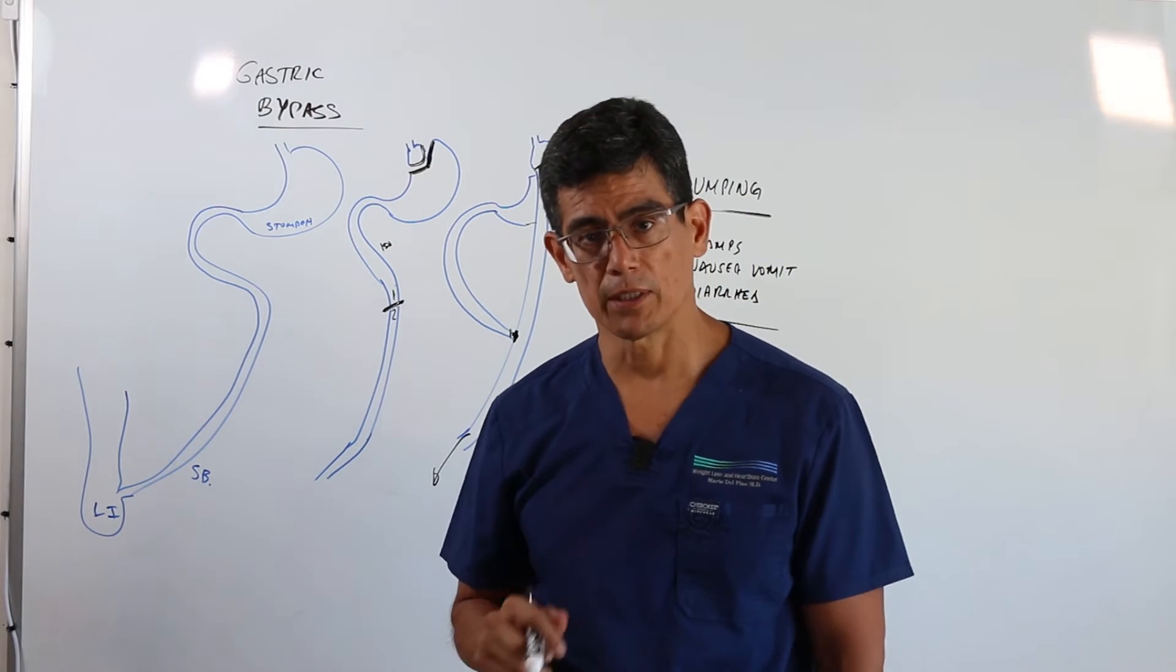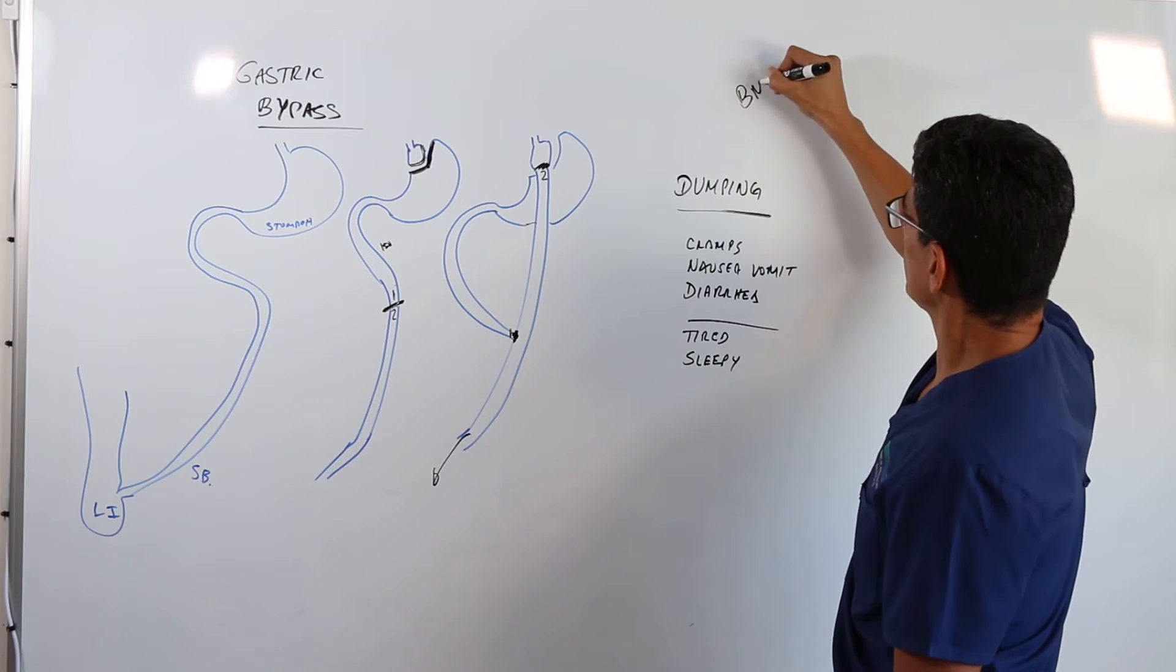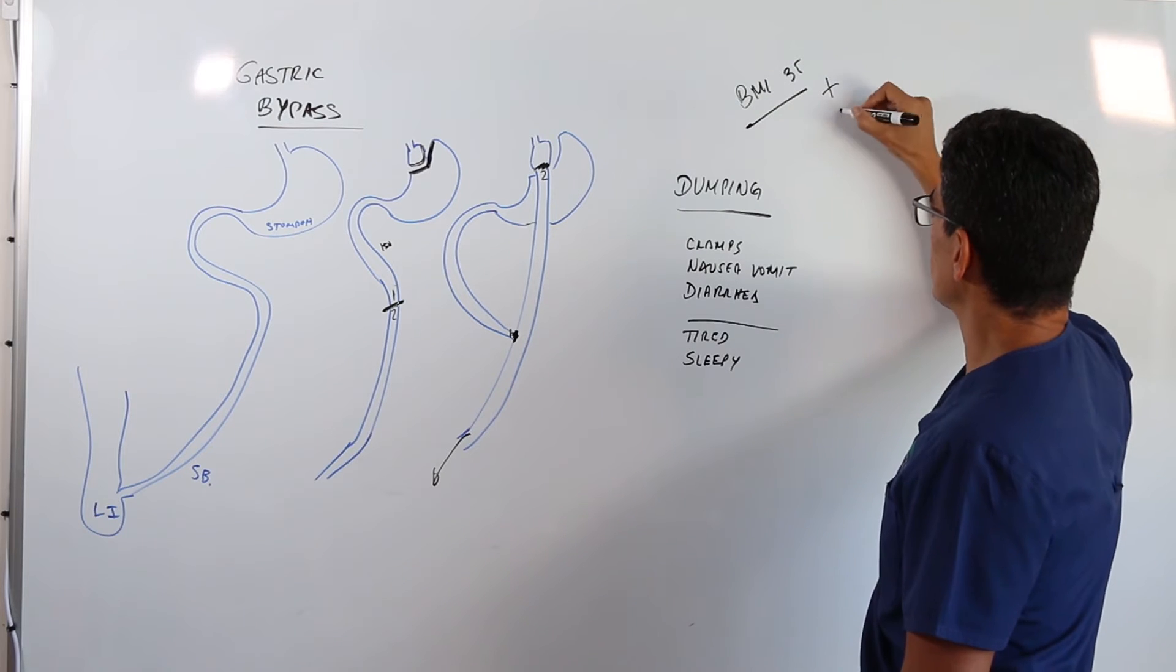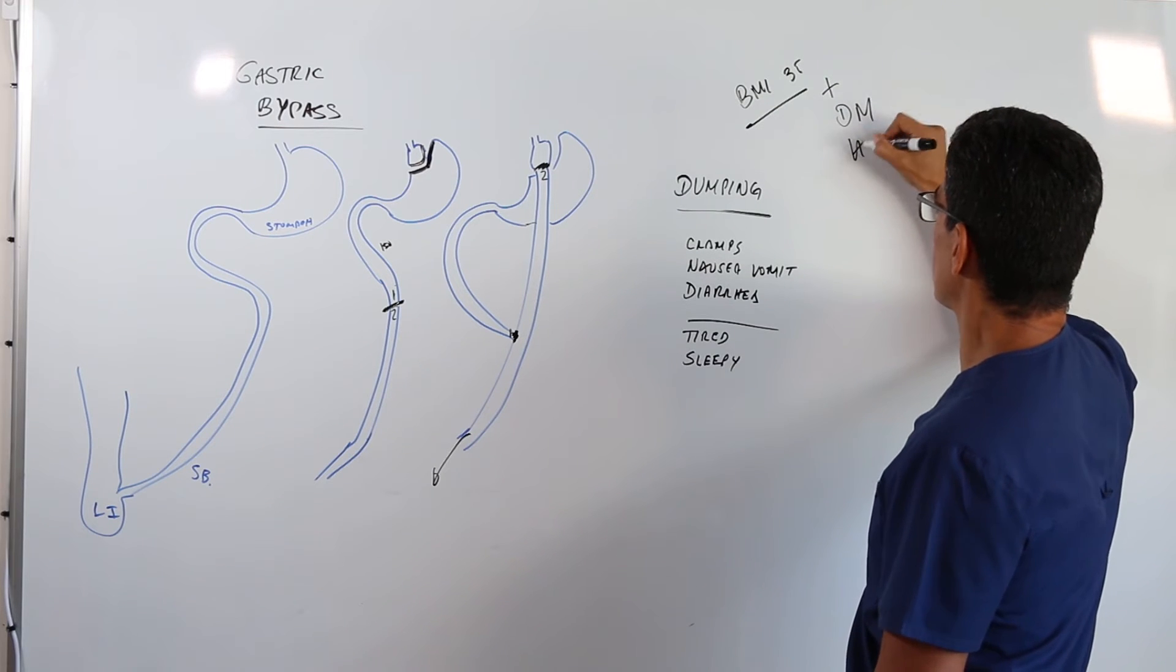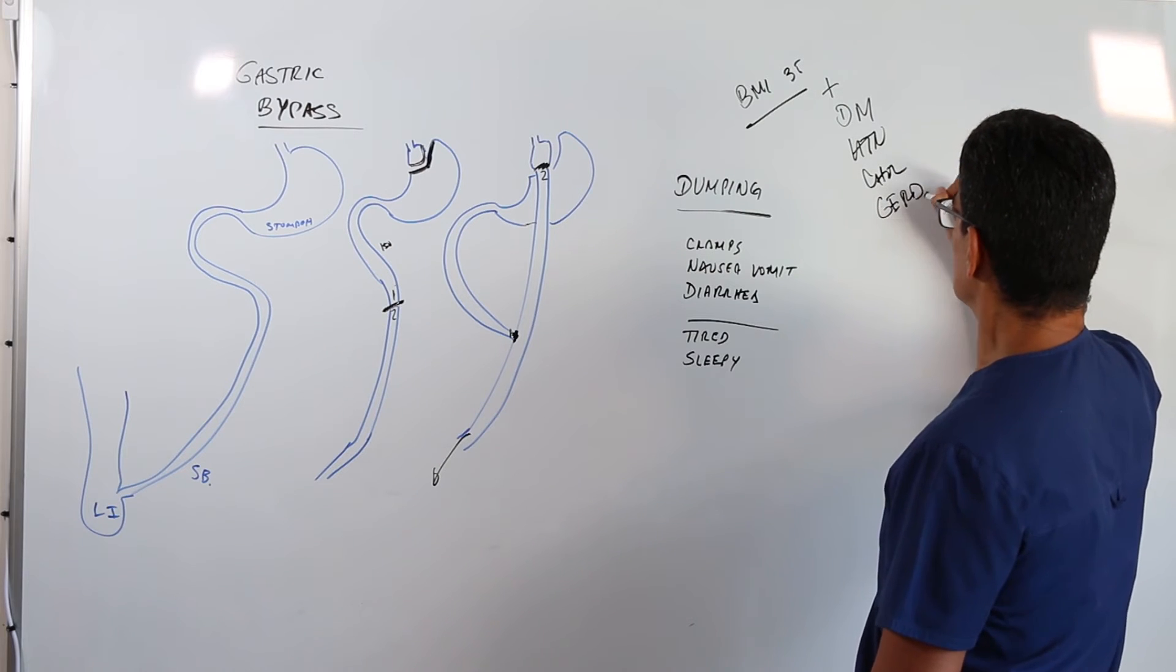When do I recommend a gastric bypass? Well, of course your BMI has to be at least 35 or higher. And I usually recommend that for people who suffer from diabetes, high blood pressure, high cholesterol, or have reflux disease.